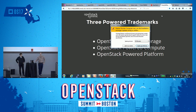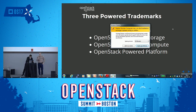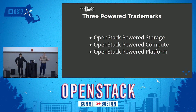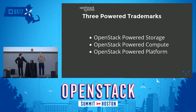Right now the OpenStack Powered Program has three different trademarks, all roughly based on the same guidelines. We have OpenStack Powered Storage, which is OpenStack Swift object storage. We have OpenStack Powered Compute, which includes what you would consider the classic integrated projects: Keystone, Nova, Cinder, Neutron, Glance — your compute, networking, and storage. And then we have the OpenStack Powered Platform, which is a combination of the first two trademark programs.